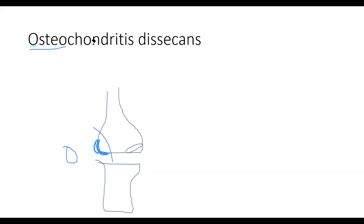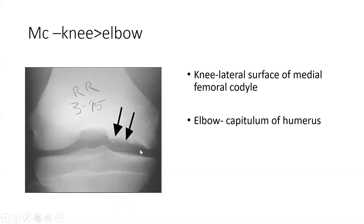So osteochondritis dissecans is when a subchondral bone — which is cartilaginous bone, bone with cartilage — undergoes inflammation, is removed, and starts floating inside the joint as a loose body. The most common affected area is the knee joint. This fragment area gets separated from the bone and the subchondral bone starts moving inside as a loose body.